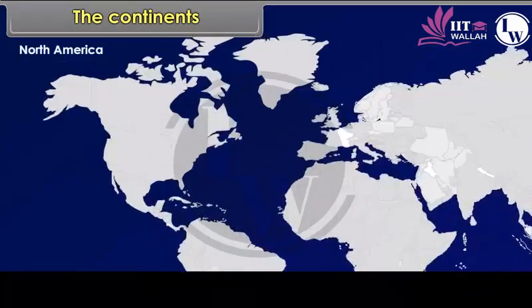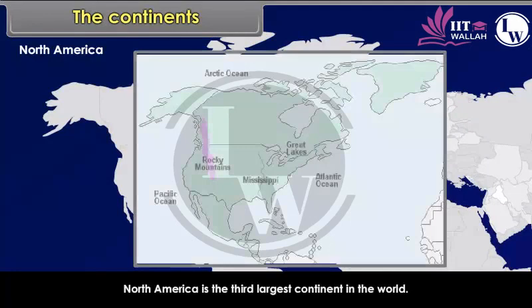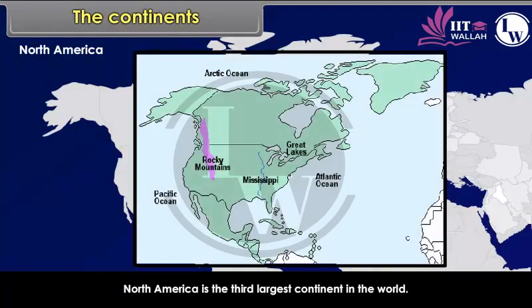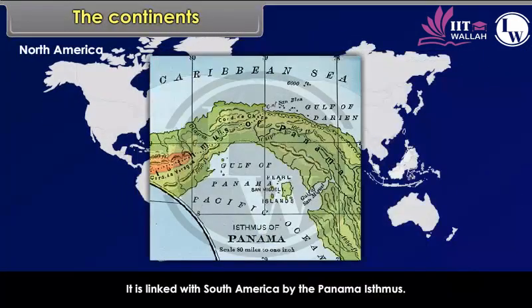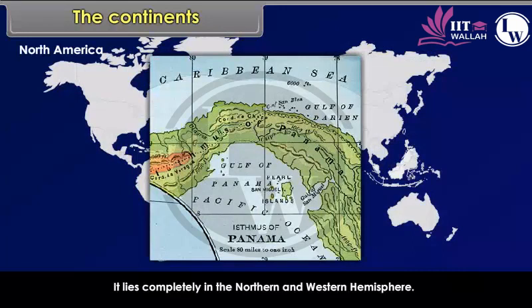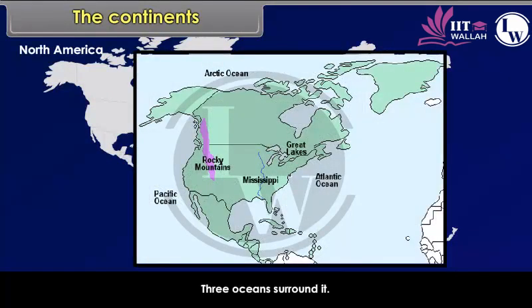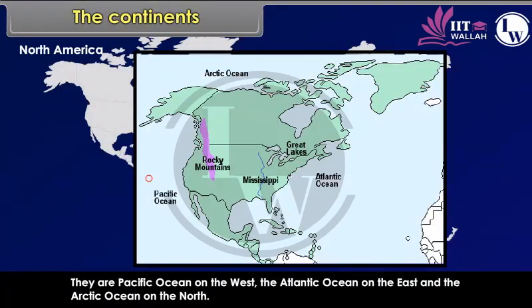North America is the third-largest continent in the world. It is linked with South America by the Panama isthmus. It lies completely in the northern and western hemispheres. Three oceans surround it: the Pacific Ocean on the west, the Atlantic Ocean on the east, and the Arctic Ocean on the north.